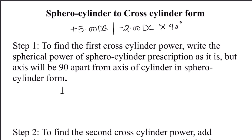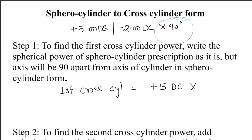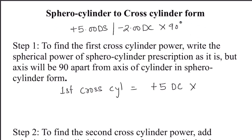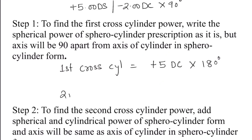So our first cross cylinder will be equal to plus 5 diopter cylinder, but the axis will be 90 degrees apart from the cylindrical axis of the sphero-cylinder form. Since the cylindrical axis in the sphero-cylinder form is at 90 degrees, 90 degrees apart means the axis here will be at 180 degrees. So we have found our first cross cylinder.